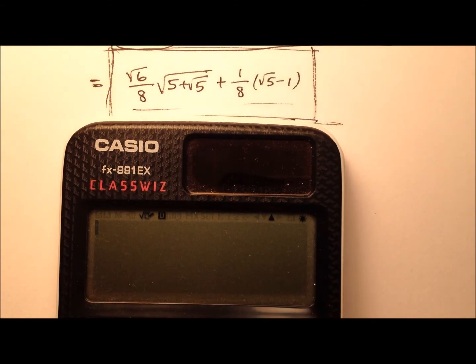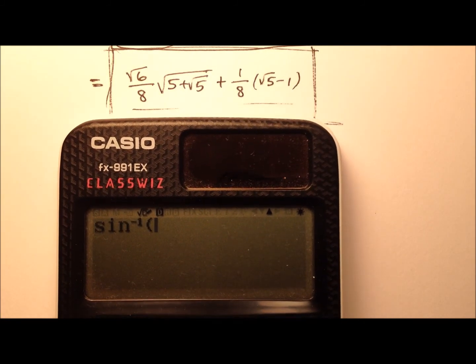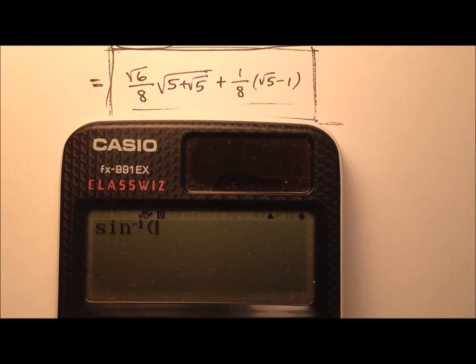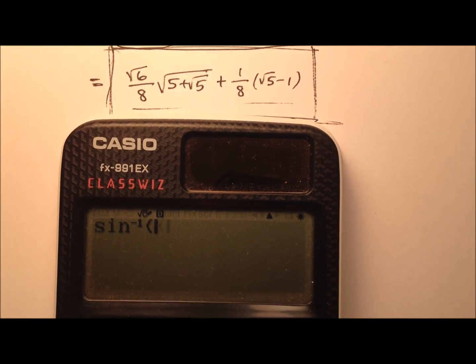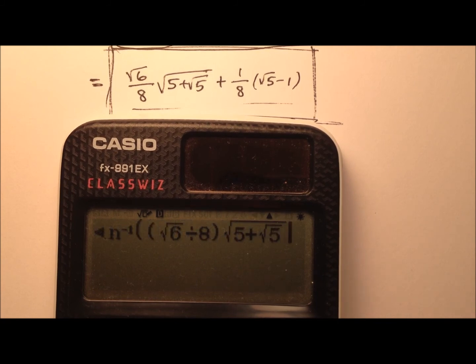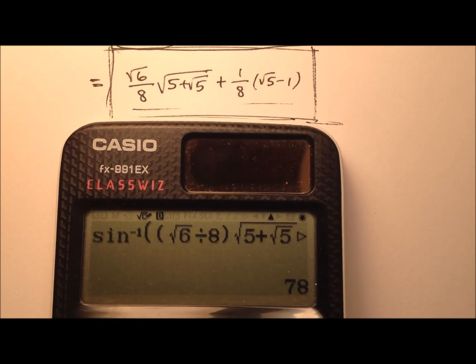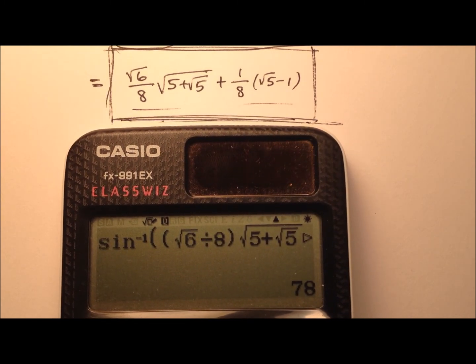So, here's our calculator. Let's go ahead and do the inverse of sine and we'll throw this expression in and hopefully we get 78 degrees. We'll start out with the square root of 6 divided by 8. And to that, we're going to multiply this square root expression here. And then we will add to that 1 eighth being multiplied by the square root of 5 minus 1. Close up all those parentheses and we get, yeah, 78 degrees.